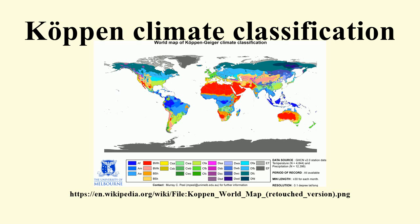Later, German climatologist Rudolf Geiger collaborated with Köppen on changes to the classification system, which is thus sometimes referred to as the Köppen-Geiger climate classification system.